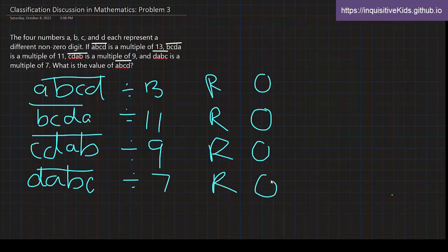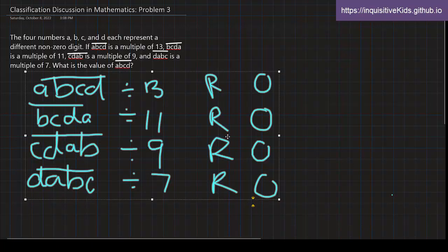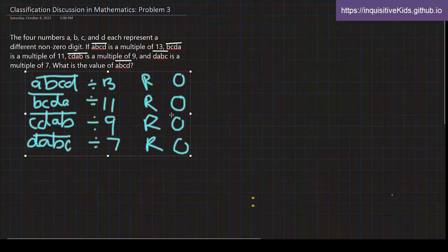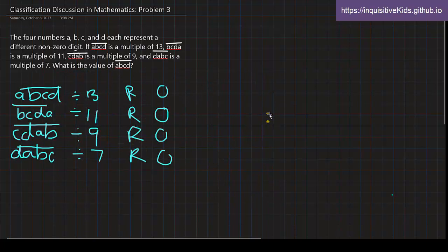So this is basically four very straightforward relationships that are given in the problem. Okay, so what is our next step?